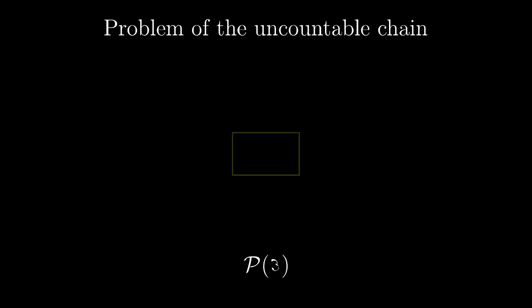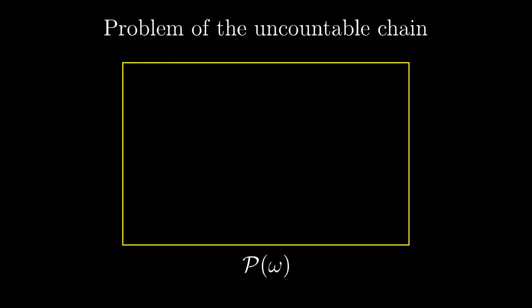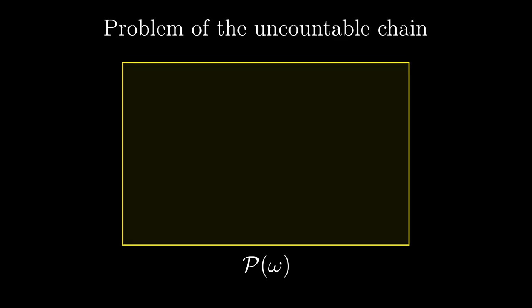The question is, how large a chain could we find in P(ω)? What is the largest chain in all the subsets of natural numbers? The powerset of omega itself has cardinality continuum, but could we find an uncountable chain there?